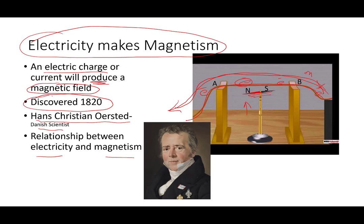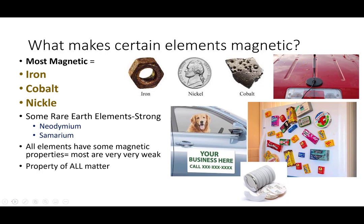So what makes something magnetic? The most magnetic elements that we know of are iron, cobalt, and nickel. If you remember your chemistry and periodic table, these three elements are cuddled up very close to each other on that periodic table. And these are the most magnetic common elements.